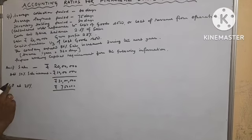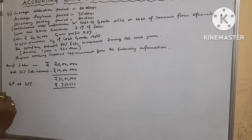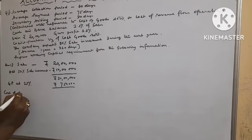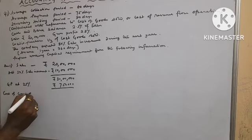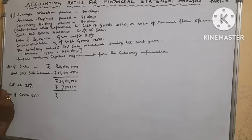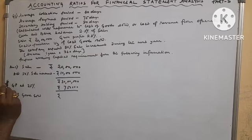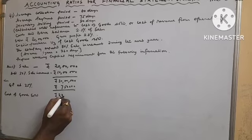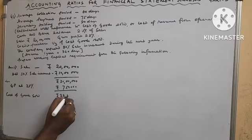After deducting GP, we got cost of goods sold. Less GP, cost of goods sold will be 22 lakhs 50,000.